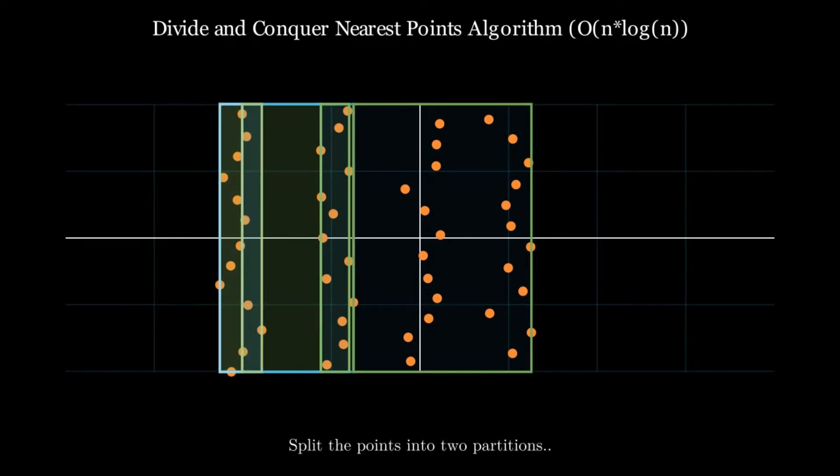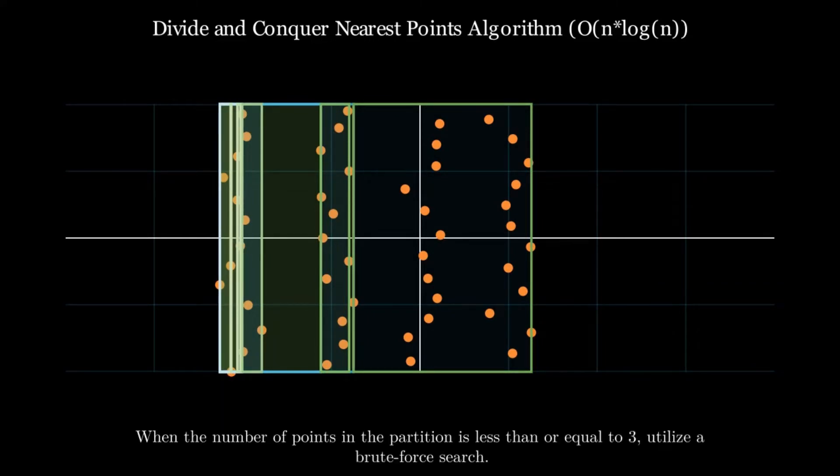With all divide-and-conquer algorithms, we'll need a base case. We'll keep dividing into two partitions until a partition has three or less points in it. Once we find a partition with three or less points, return the closest two points in constant time. In an inductive recursion model, this is our base case.